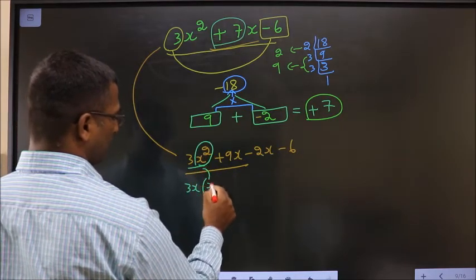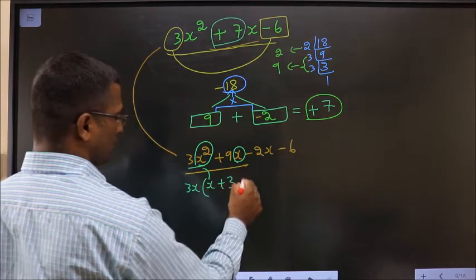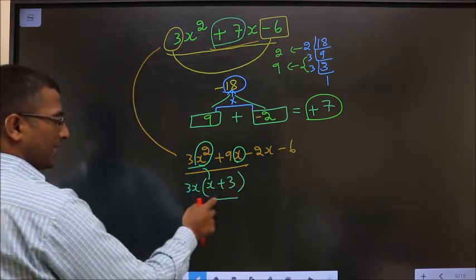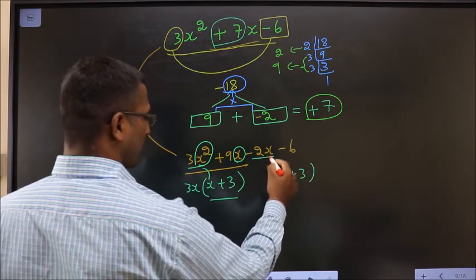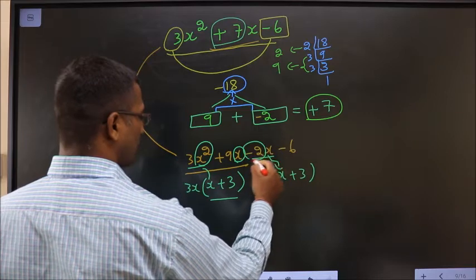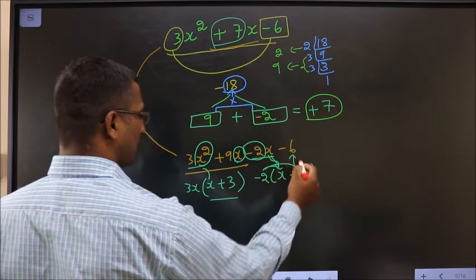From x square, 1x is gone. So leaving with another x. This x is gone out. From 9, 3 is gone means this should be 3. Here you got x plus 3 means here also it should be x plus 3. From this, x is gone out means outside should be minus 2. Even if you multiply, you get the same answer.